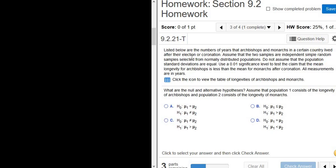In this problem we have a hypothesis test. It says listed below are the numbers of years that archbishops and monarchs in a certain country lived after their election or coronation. Assume that the two samples are independent, simple random samples selected from normally distributed populations. Do not assume that the population standard deviations are equal. Use a 0.01 significance level.